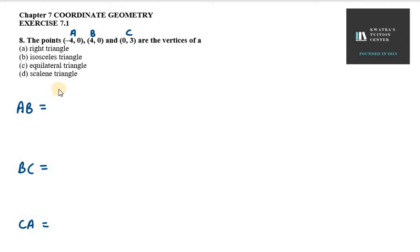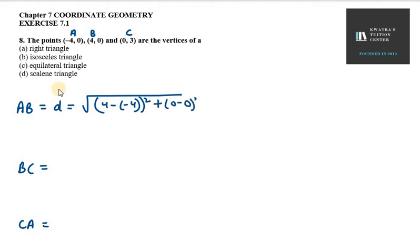Let's find out using the distance formula. For AB, we calculate (4 minus minus 4) whole square plus (0 minus 0) whole square. That gives us 8 squared. The square root and square cancel out, so we get AB = 8 units.